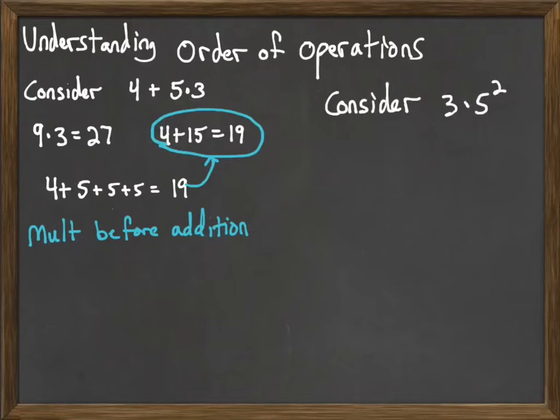Consider the same thing again here with a multiplication and an exponent, 3 times 5 squared. Again, without an order of operations, we could choose to do 3 times 5 is 15, and 15 squared is 225. Or we could turn around and say, I'm going to do the 5 squared first. Remember, square means multiply times itself. So 5 times 5 is 25, times 3 is 75.